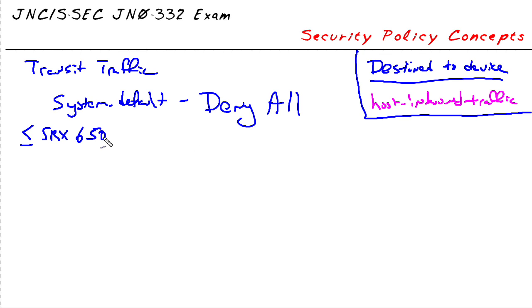In here we do have factory default policies. We have a couple things that are set up for us. That is going to be a trust, you remember the trust zone. So a trust to trust, that would be my intrazone traffic, as well as my trust to untrust, stuff going out to the internet if you will. And everything in here will be permit all.